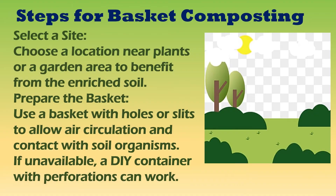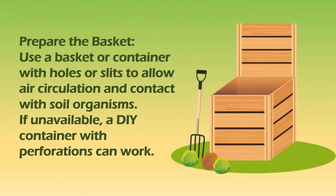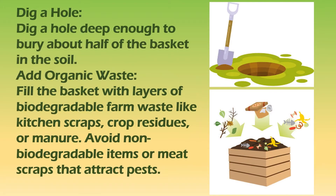Steps in creating your own basket compost: Start by choosing a good location with good air circulation and partial shade. Place a layer of coarse materials like twigs or small branches at the bottom to allow airflow. Then alternate layers of green waste, such as vegetable scraps, and brown waste like dried leaves. Add moisture as needed and cover the top to retain heat. Turn the compost occasionally to help it break down, and soon you'll have rich, nutrient-filled compost for your plants.